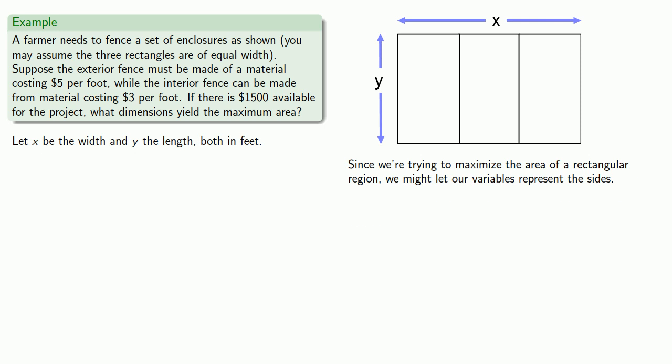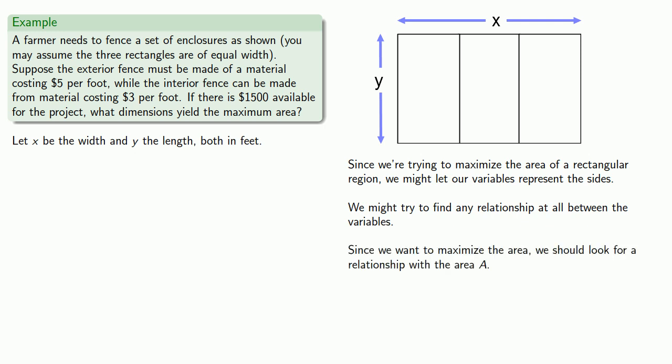Next, we might try to find any relationship at all between the variables, and possibly some other quantities. Since we want to maximize the area, we should look for a relationship with the area A.